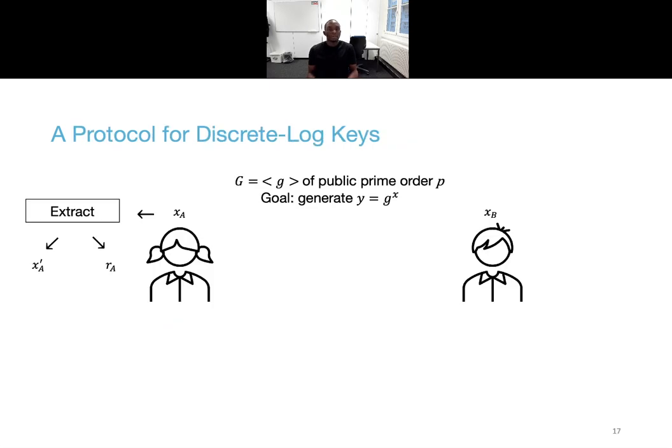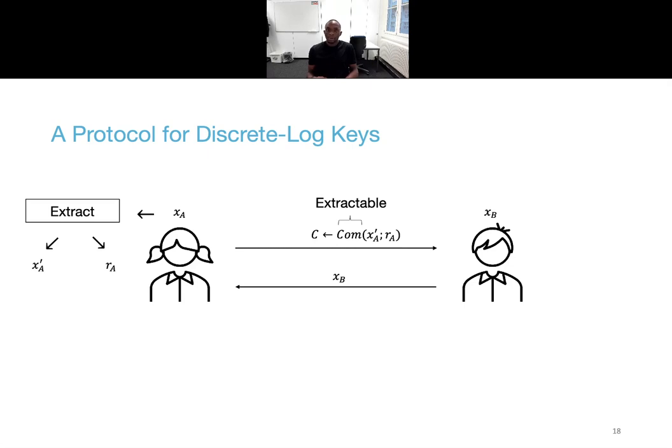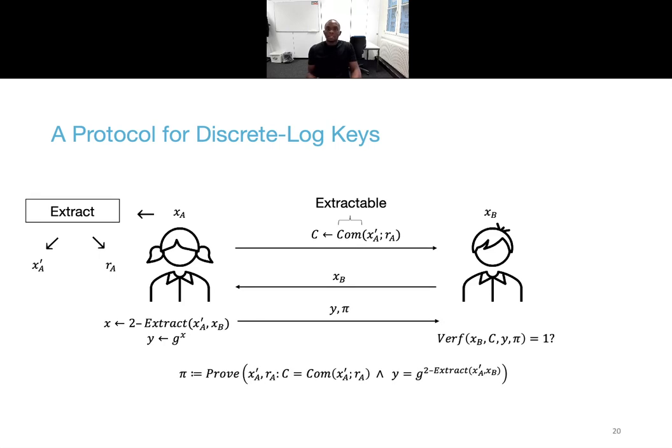Now that the model has been established, consider again the problem of discrete log keys. The idea is now to have Alice extract two random strings from her original one. One that would be her partial secret key xA' and the other that will be used to commit to the first part, to xA'. The commitment scheme must here be extractable to be able to carry out the security proof. After Alice receives Bob's randomness, she extracts a secret key x from these sources of randomness. She then computes also y as g to the x. She then proves to Bob that she extracted the secret key using Bob's randomness and that the one she committed to in the first round. And Bob can then verify the proof using the commitment from the first round.